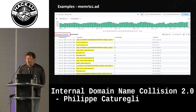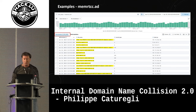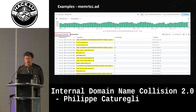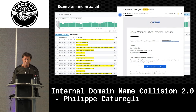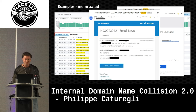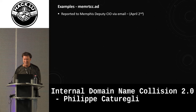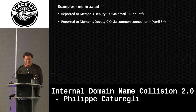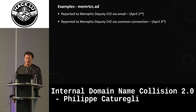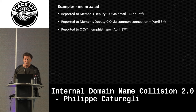Once we had the domain, we set up a DNS server, and within a few days we recorded about 1.3 million records — obviously all from internal network traffic. We also set up a mail server and started receiving internal mail misrouted to us. We decided to report it to the Memphis deputy CIO on April 2nd — we waited one day because I didn't want to report it on April 1st. We followed up the next day because we figured it was sketchy to receive an email from a random guy saying 'we own your domain.' No response. A few weeks later I tried the CIO of Memphis city — he looked at my LinkedIn profile but never responded.